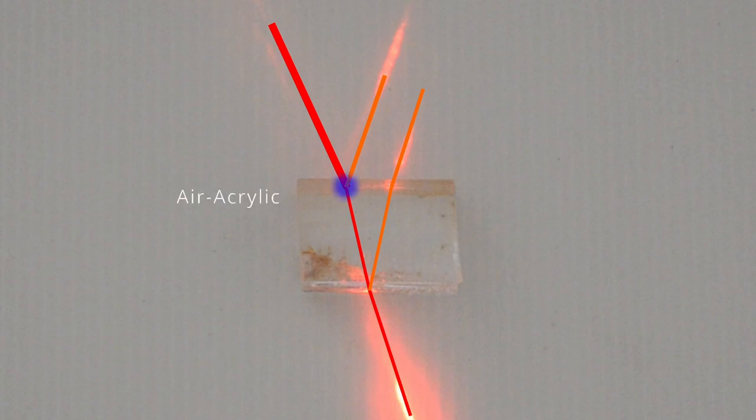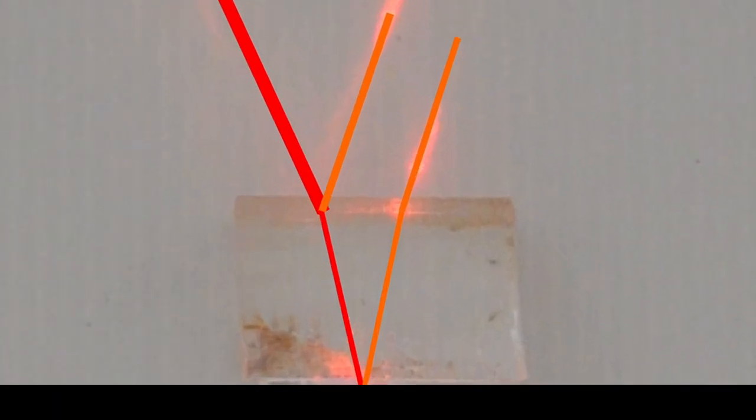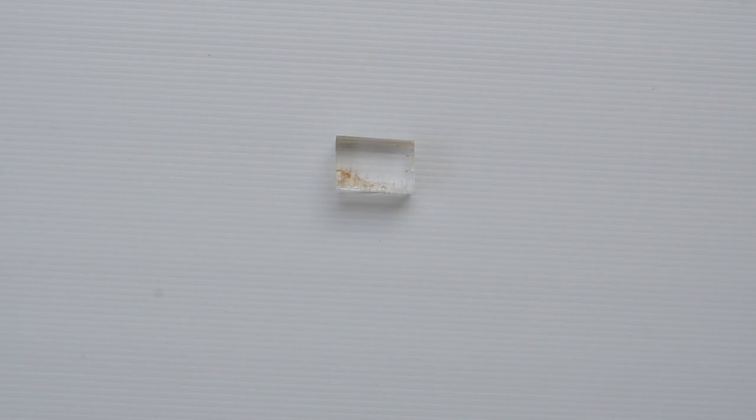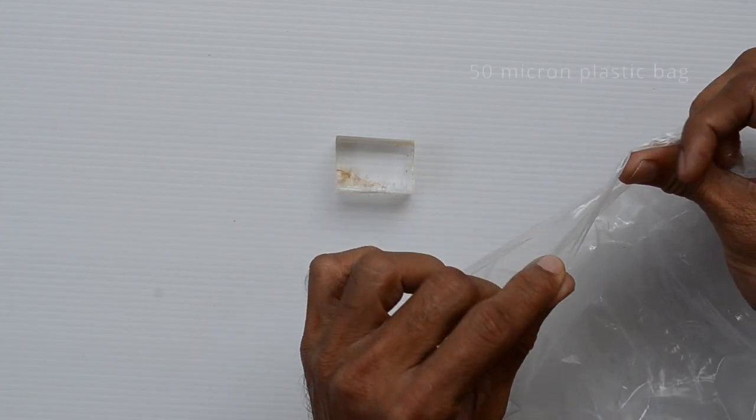Air to acrylic, acrylic to air, and again acrylic to air. We will not consider these rays leaving the slab at this location. Thickness of this acrylic block is in centimeters. Thin films are really thin, almost 100 times thinner than this 50 micron plastic carry bag.